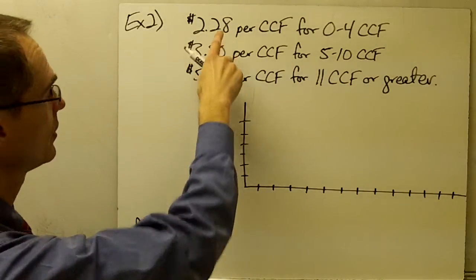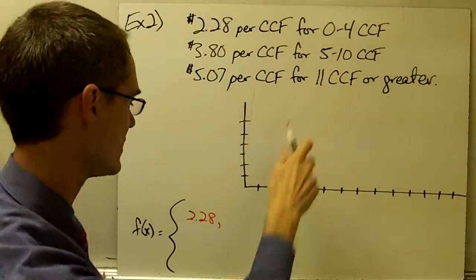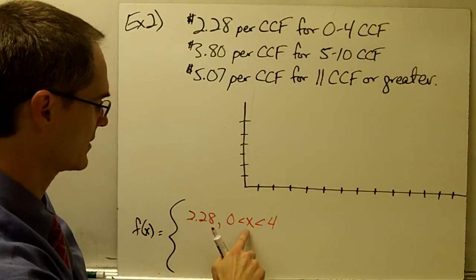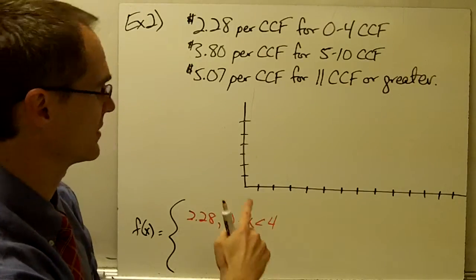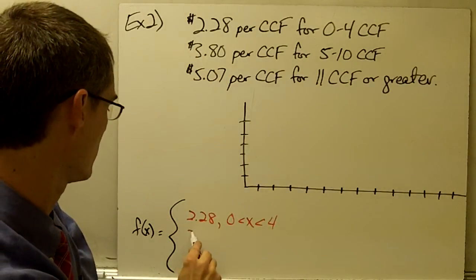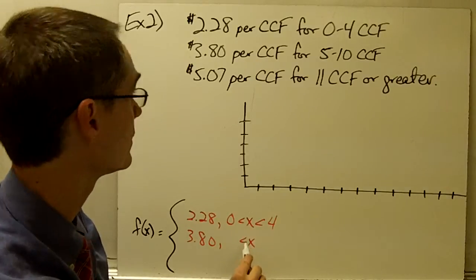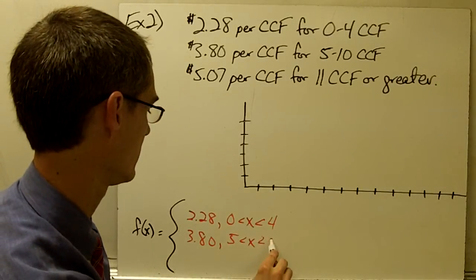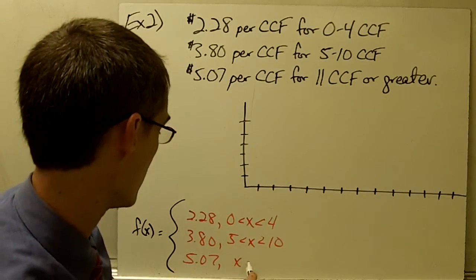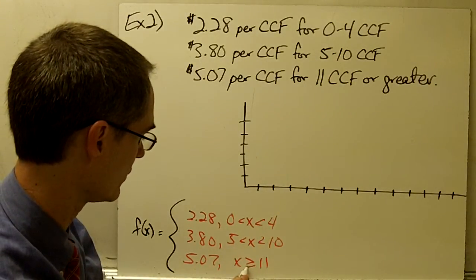So f of x equals $2.28 when x is between 0 and 4. The value of the function is $3.80 when x is between 5 and 10. And $5.07 when x is greater than or equal to 11. I'm not going to worry about the equal signs yet — I'll come back and fill in those details in a minute.